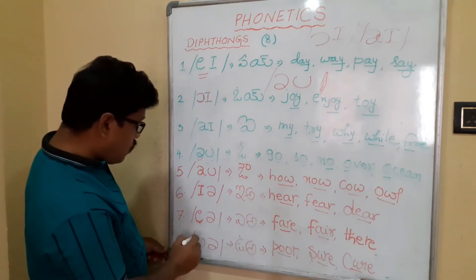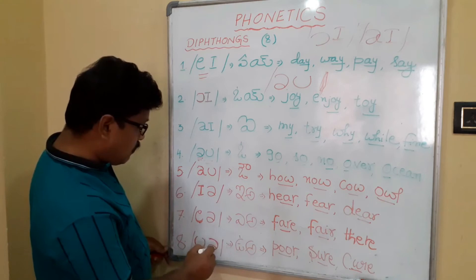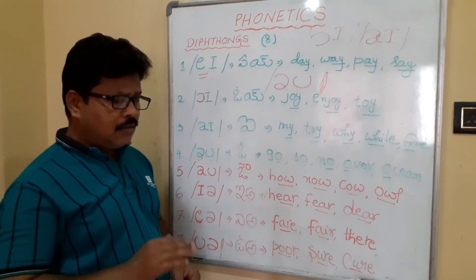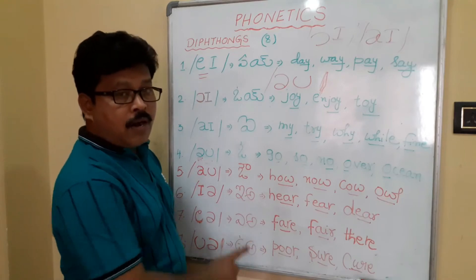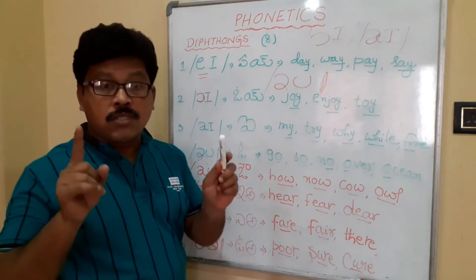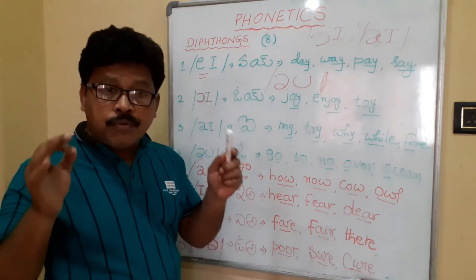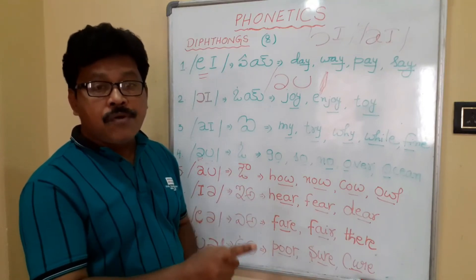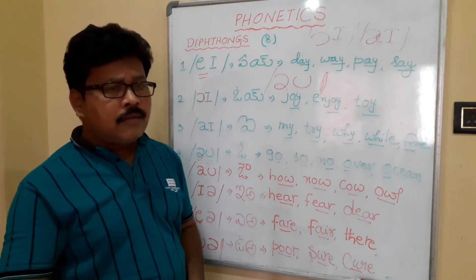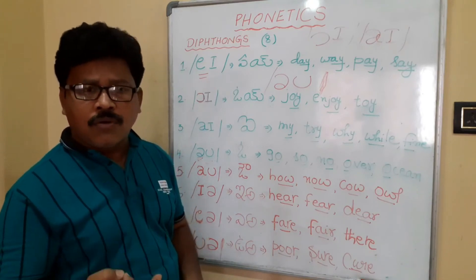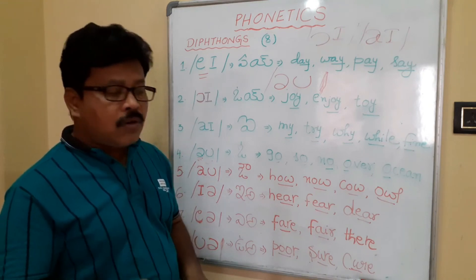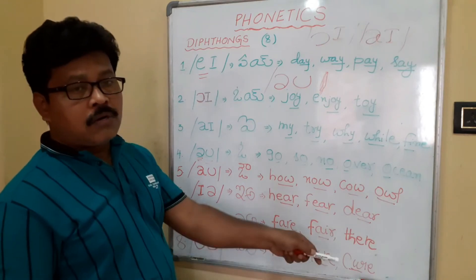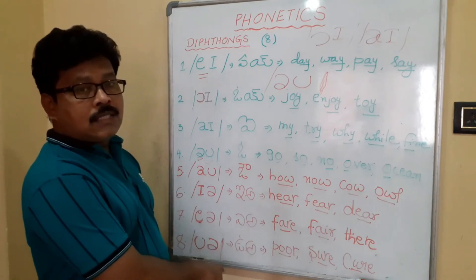The eighth and last diphthong: if you write U and A, this is the /ʊə/ sound. It is not frequently used — rarely used. Examples: poor, sure, cure, pure. Don't say 'poor' incorrectly — it should be 'poor'. Sentences: 'He is a poor man.' 'The milk is pure.' 'Impure.' This is the symbol for the /ʊə/ sound.